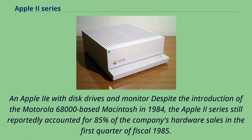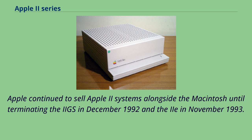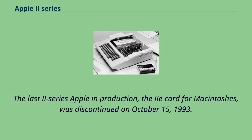Despite the introduction of the Motorola 68000-based Macintosh in 1984, the Apple II series still reportedly accounted for 85% of the company's hardware sales in the first quarter of fiscal 1985. Apple continued to sell Apple II systems alongside the Macintosh until terminating the IIgs in December 1992 and the IIe in November 1993. The last Apple II product, the IIe card for Macintosh, was discontinued on October 15, 1993.